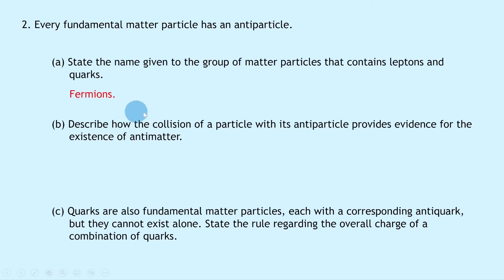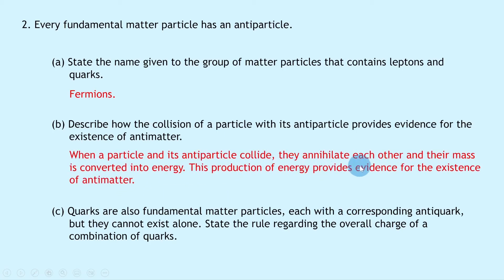Part b then says to describe how the collision of a particle with its antiparticle provides evidence for the existence of antimatter. Well, we can say that when a particle and its antiparticle collide, they annihilate each other and their mass is converted into energy. This production of energy provides evidence for the existence of antimatter.